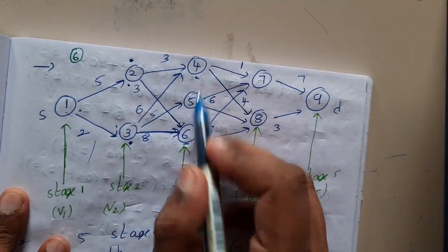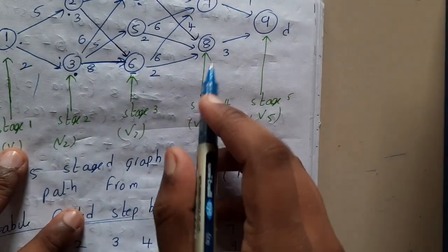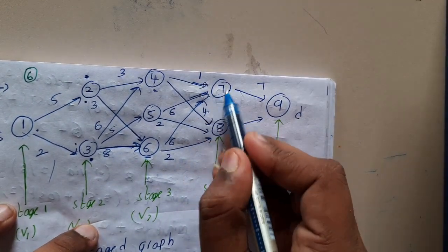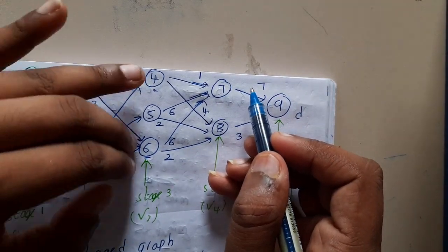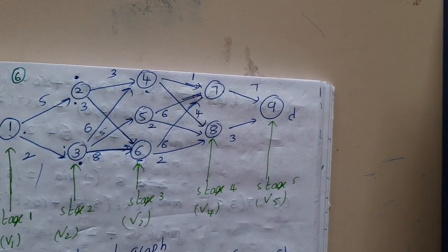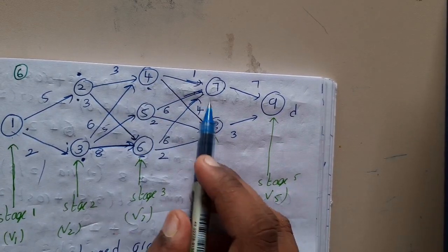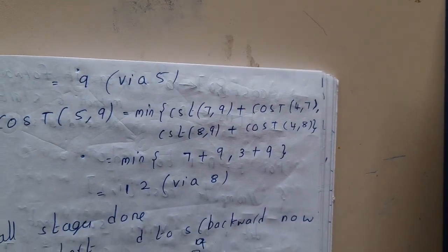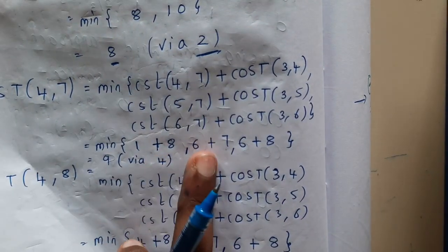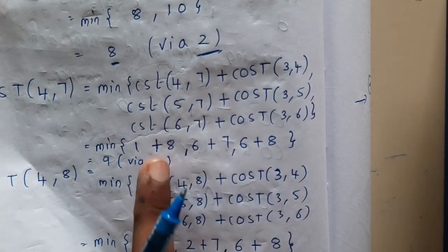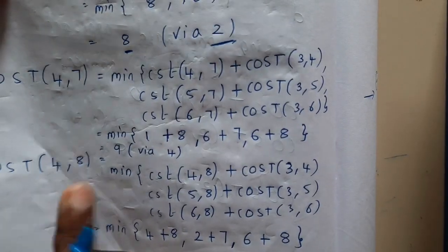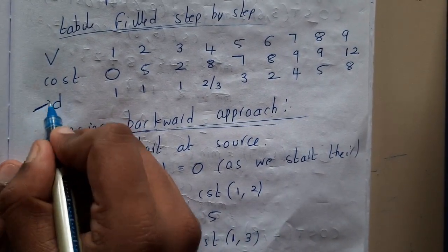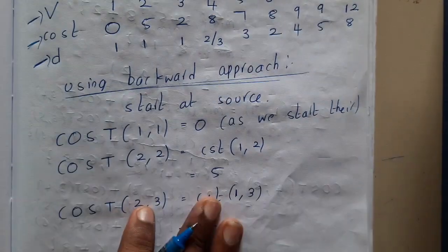Stage three is now complete. Moving to stage four, vertex seven has three incoming edges — via vertices 4, 5, and 6. From vertex 4 to 7: edge cost 1, so 1 + cost(4) = 9. From 5 to 7: edge cost 6, so 6 + cost(5) = 13. From 6 to 7: edge cost 6, so 6 + cost(6) = 14. Minimum is 9, via vertex 4. Similarly compute for vertices 8 and 9.